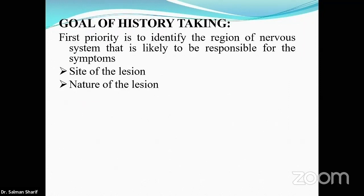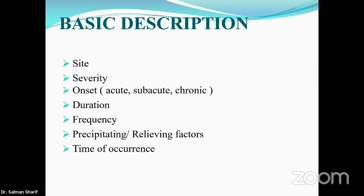The goal of the history is to identify the region of the nervous system responsible for the symptoms — to identify the site of the lesion and the nature of that lesion — and then to order investigations based on your history and examination. For any symptom, the basic description includes site, severity, onset, duration, aggravating factors, relieving factors, and recurrence.